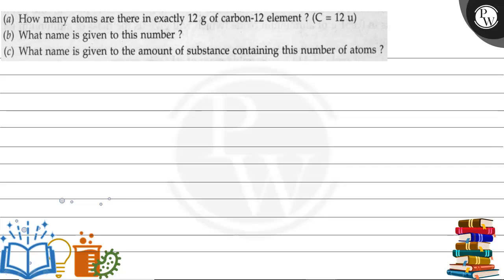Let's read the question. The question says: how many atoms are there in exactly 12 grams of carbon-12 element, given the atomic mass of carbon? Next, what name is given to this number? And next, what name is given to the amount of substance containing this number of atoms? So this question has basically three sub-parts, so we will solve it one by one.